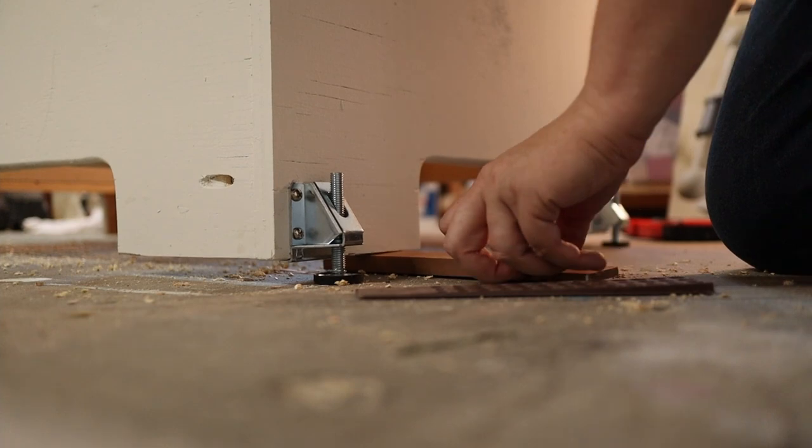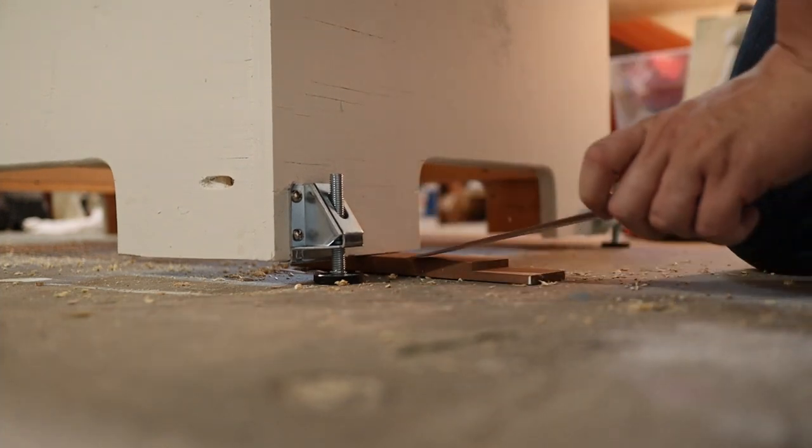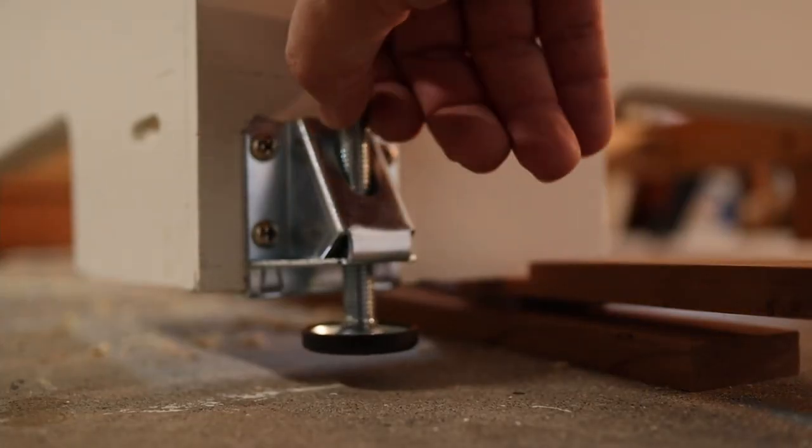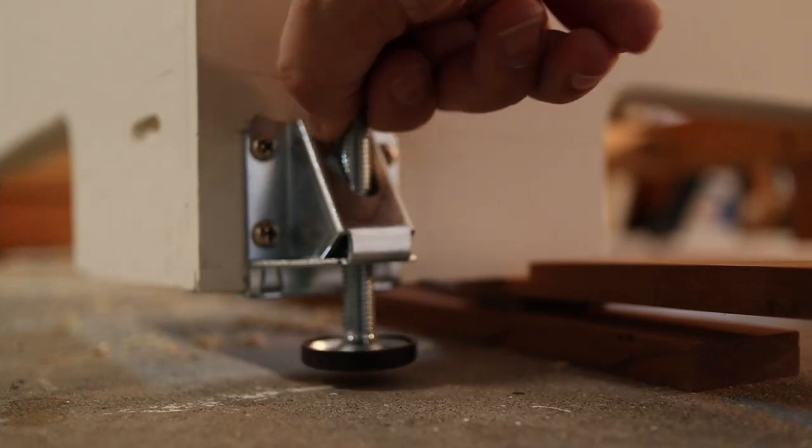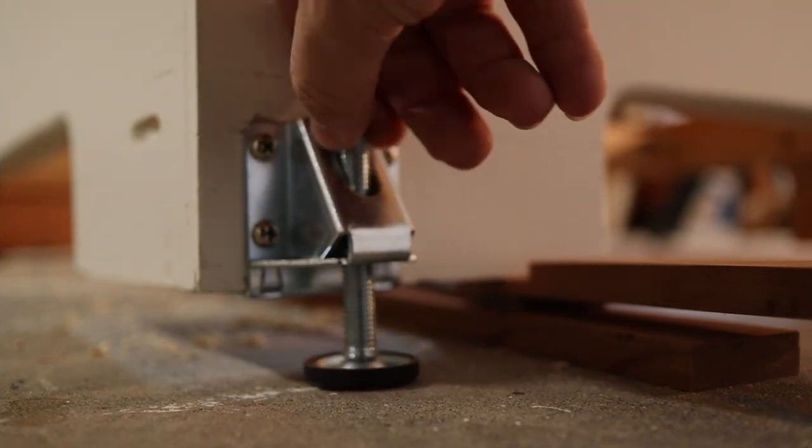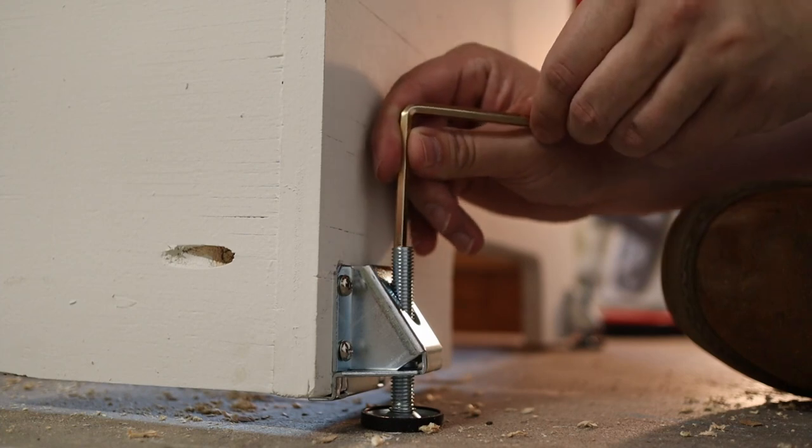And then I realized something. If I shimmed the workbench to the height that I wanted, I could just turn the screw post by hand freely. It goes a lot faster, and then I could just use the hex wrench for fine-tuning.